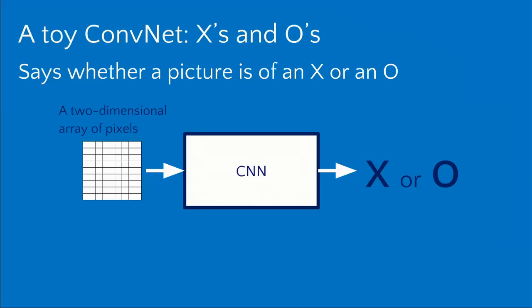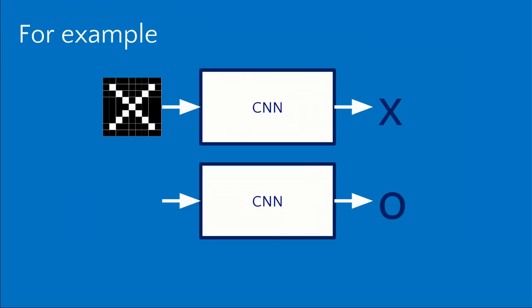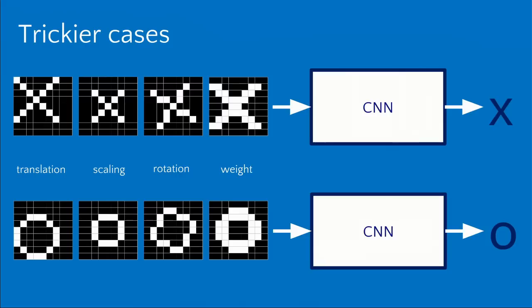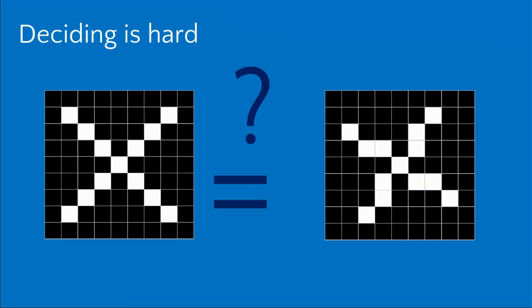To dig into how these work, we'll start with a very simple example: a convolutional neural network that can look at a very small image and determine whether it's a picture of an X or an O — just two categories. For example, this 8x8 pixel image of an X — we want our network to classify it as an X. Similarly with the image of the O. This is not entirely straightforward because a human has no problem looking at these, but for a computer this is much harder.